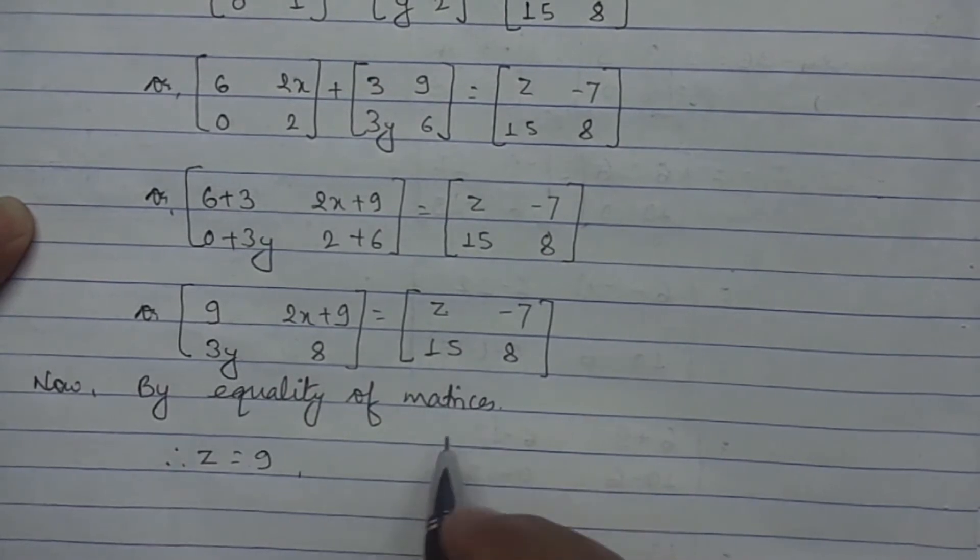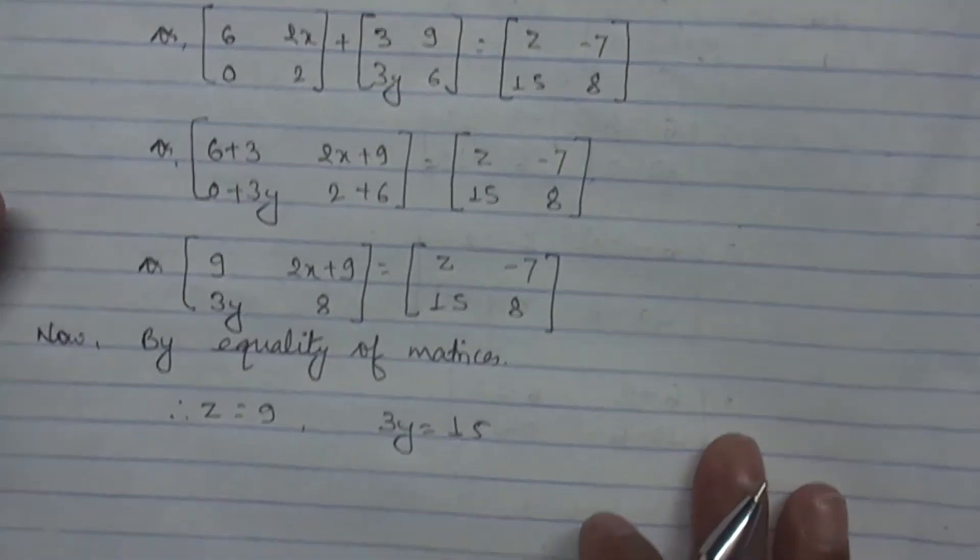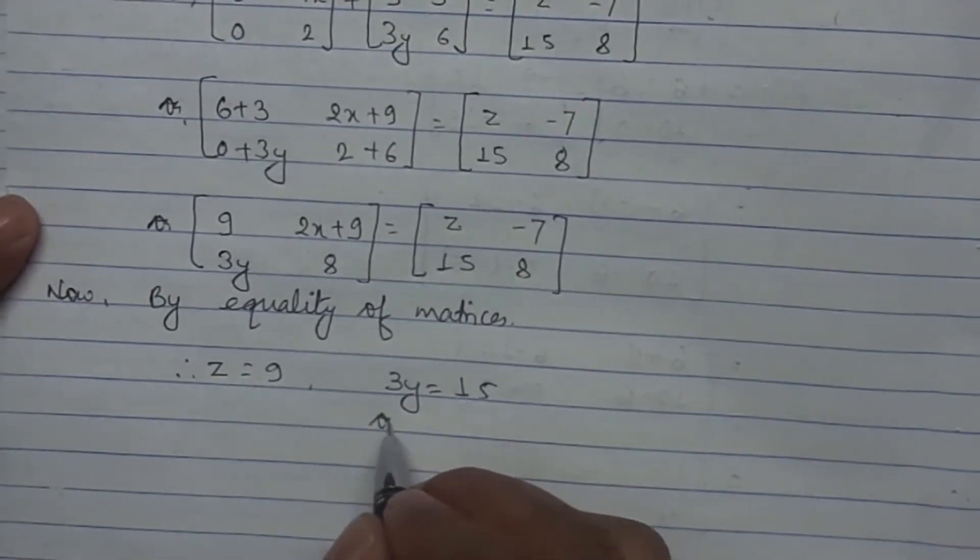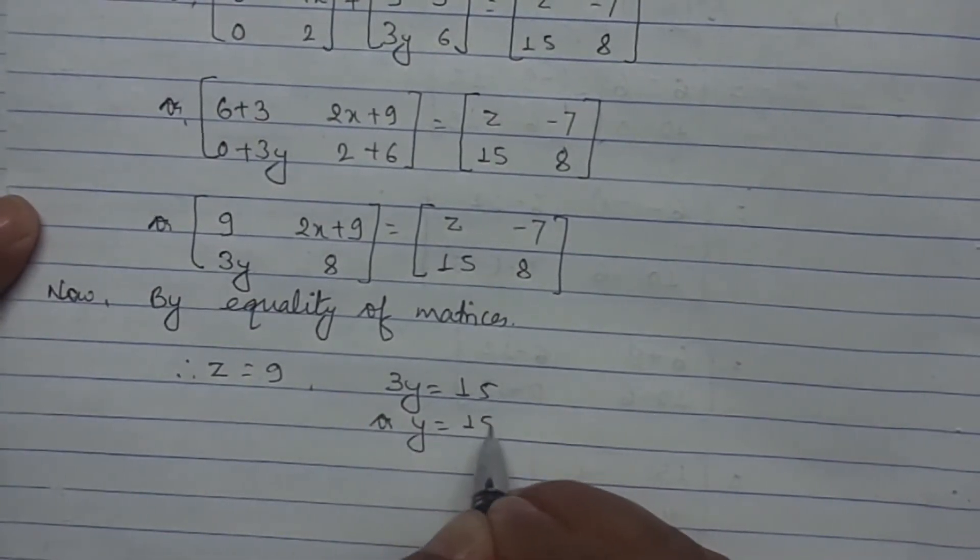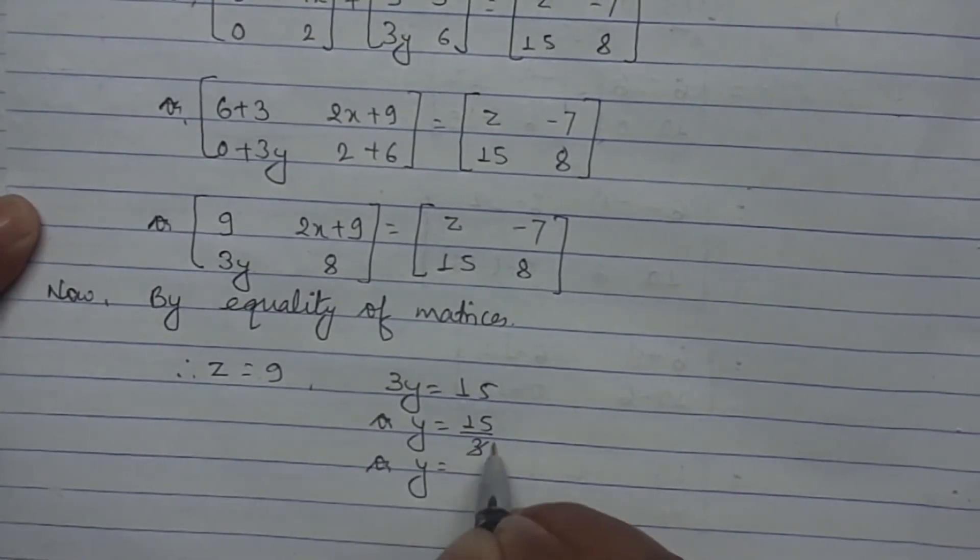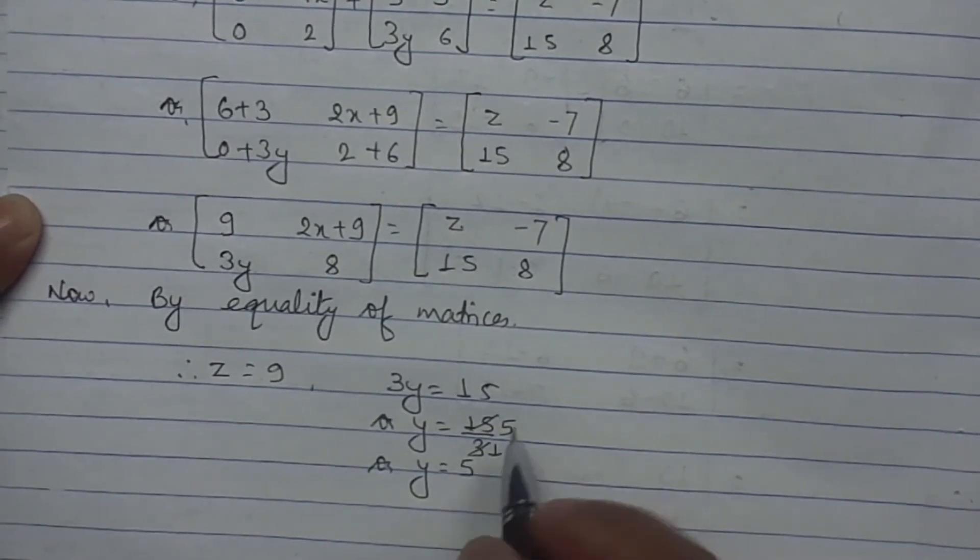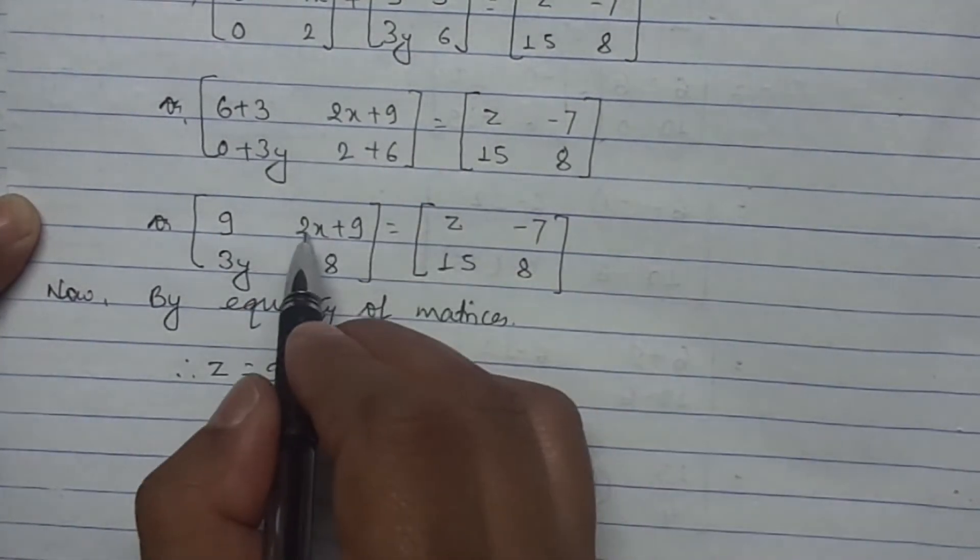3y equals 15, so y equals 15 divided by 3, which is 5. Therefore y equals 5. Now see the next, this 2x plus 9 is equated with -7.